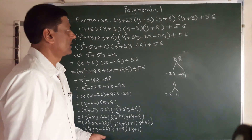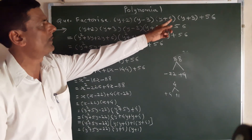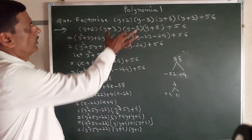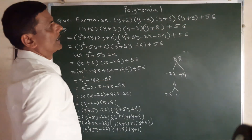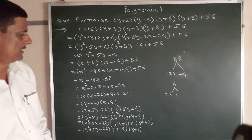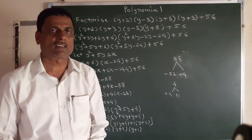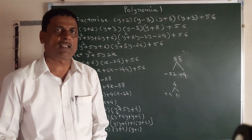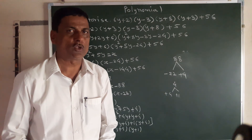So the factors of (y+2)(y-3)(y+8)(y+3) + 56 are (y squared plus 5y minus 22)(y plus 4)(y plus 1). Those are the final factors. If you liked this video, please like and subscribe to the channel and share with friends. Thank you very much.